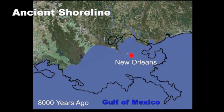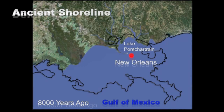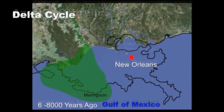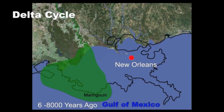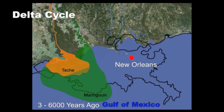Sea level continued rising, forming a bay that would ultimately become Lake Pontchartrain. Sea level rise then slowed and the river began building up sediments along the coast. Scientists called these deposits Delta Lobes.